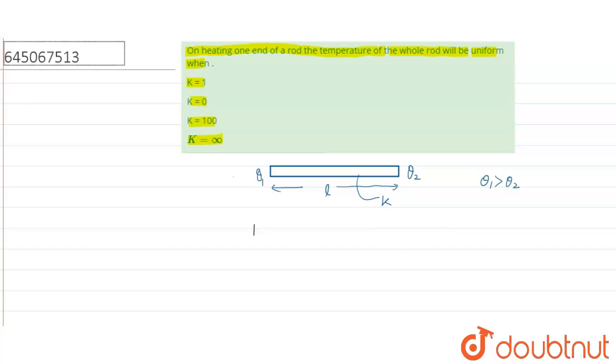Now, rate of heat transfer is equal to kA into dθ/dx. This dθ/dx is temperature gradient.